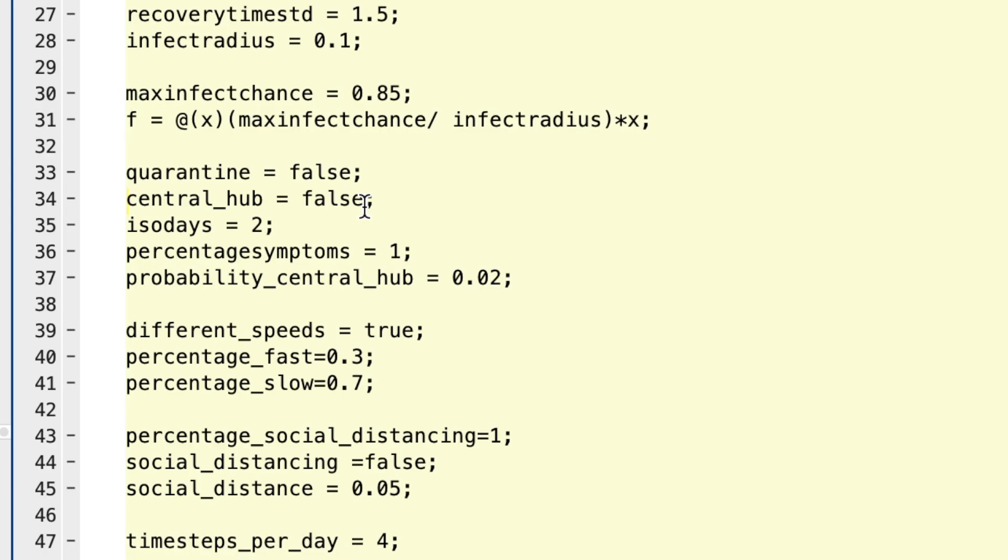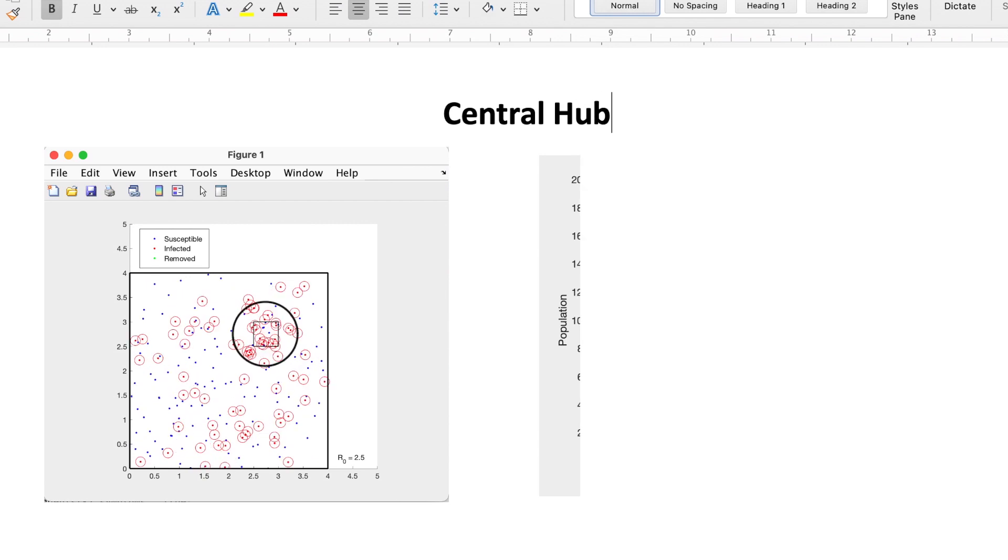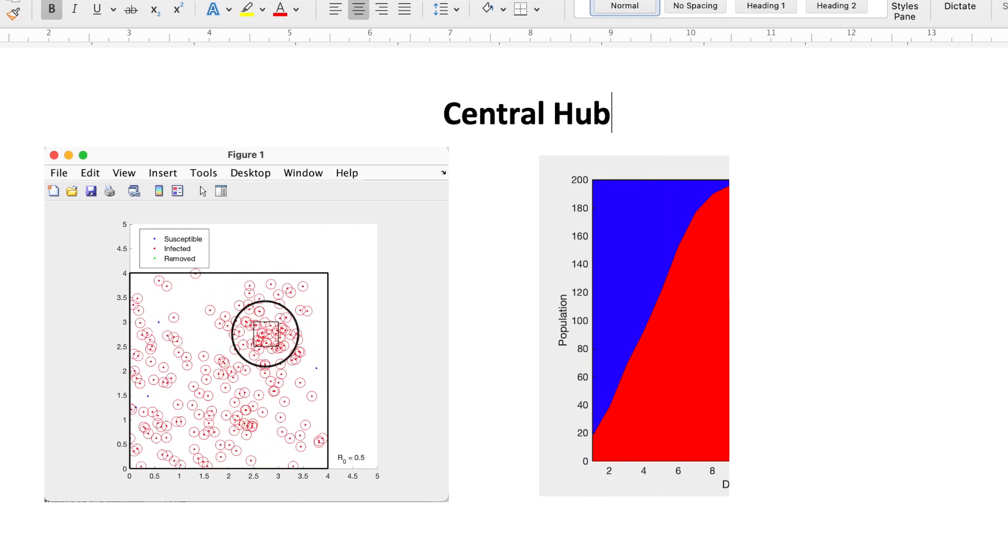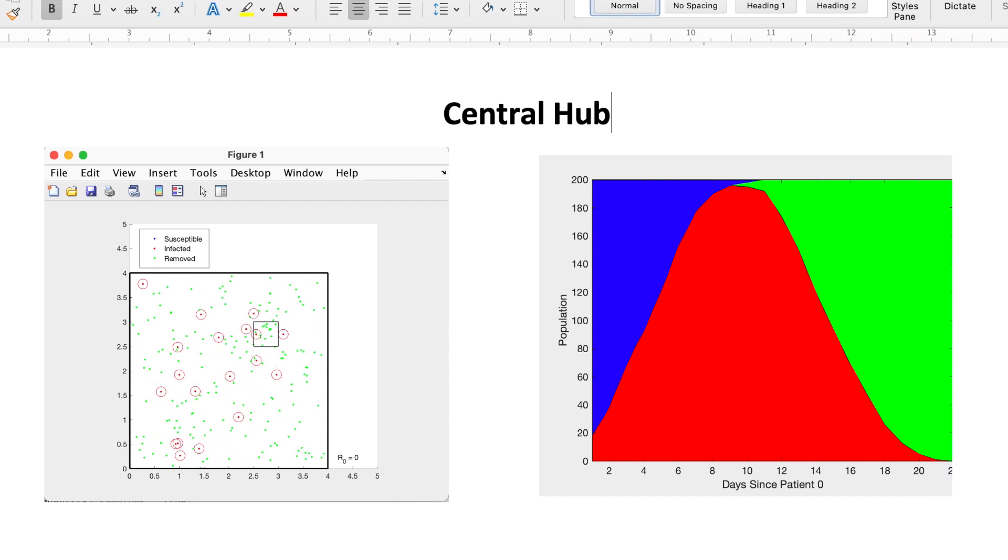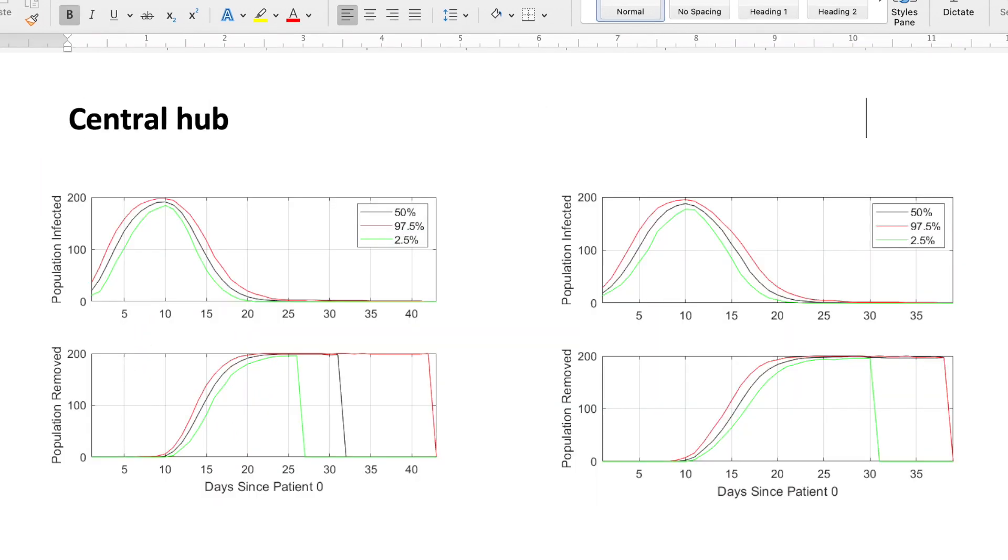Right now, agents move randomly and aimlessly during the day. In order to simulate daily life, we created a central hub that agents can visit. Every agent has a probability of two percent of visiting this hotspot. Compared to the baseline simulations, the results are mostly the same. However, agents got infected and removed a bit faster than the do-nothing scenario.